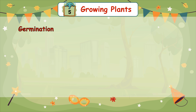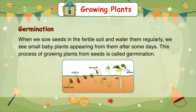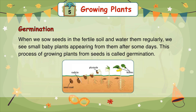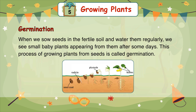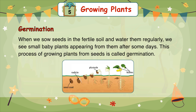Germination. When we sow seeds in fertile soil and water them regularly, we see small baby plants appearing from them after some days. This process of growing plants from seeds is called germination.